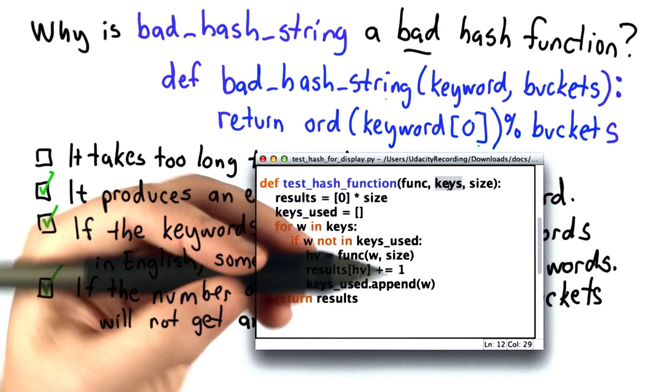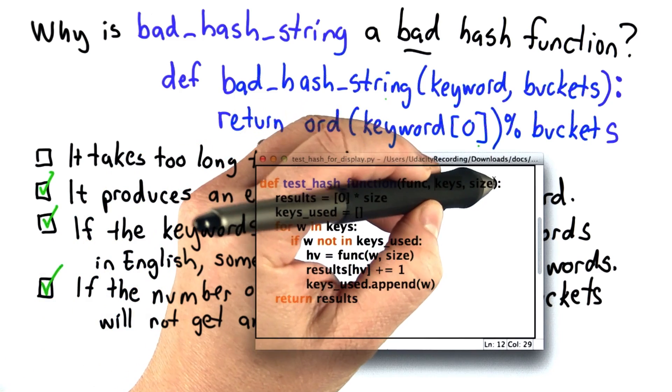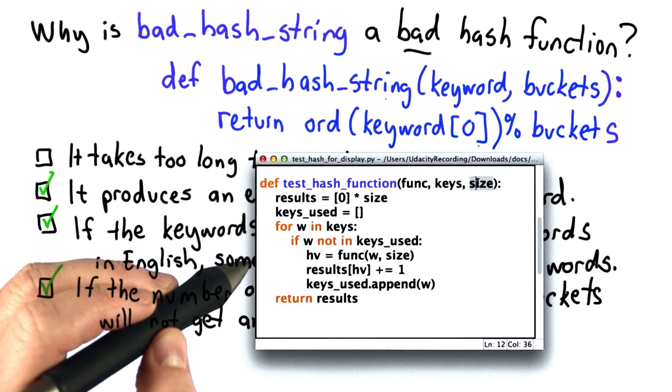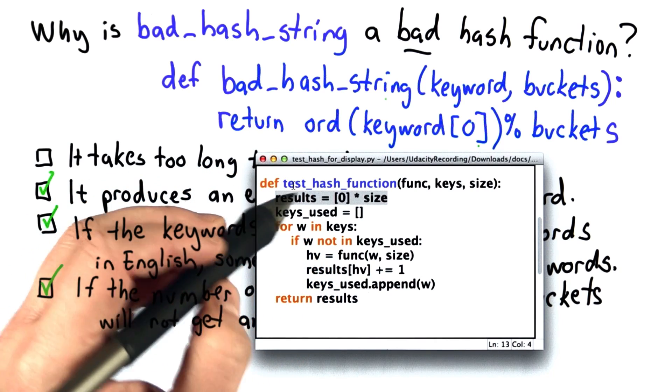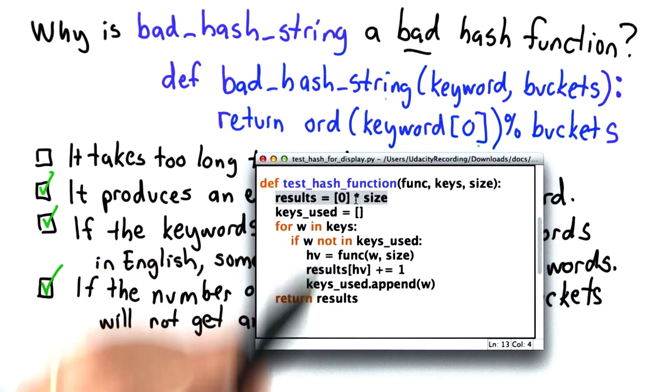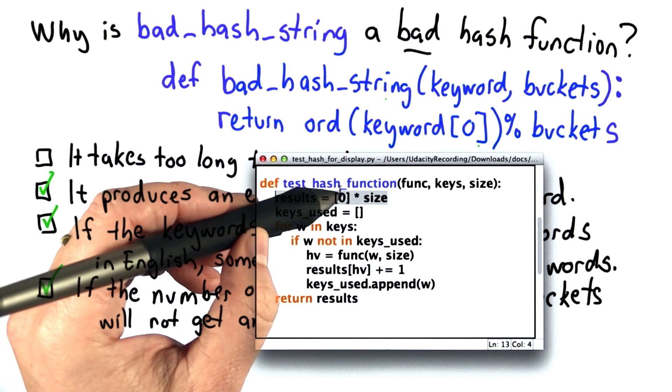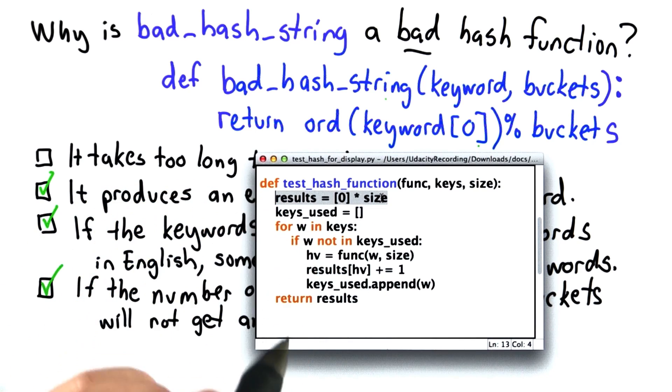We're going to pass in a list of keys. Those are the keywords for the hash table. And we're going to pass in the size. This is the number of buckets. What we do in test_hash_function is we're going to keep results as a list of the number of times each bucket is used. So initially, they're all zeros, and we initialize it with 0 times the size.